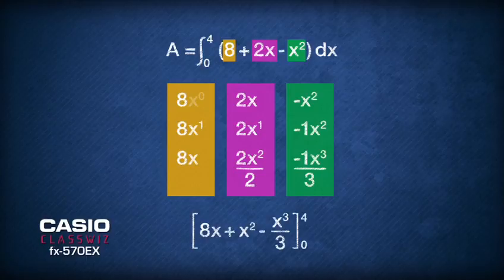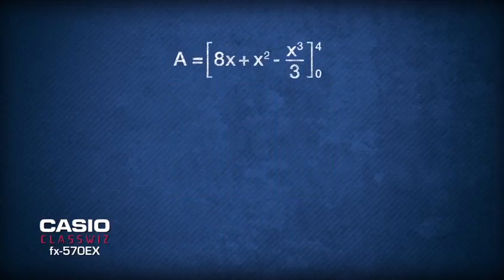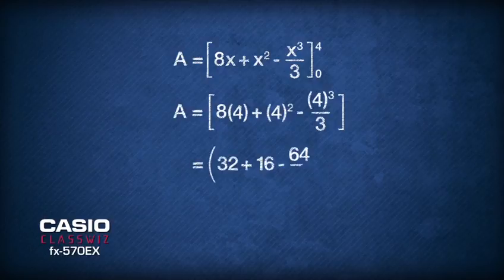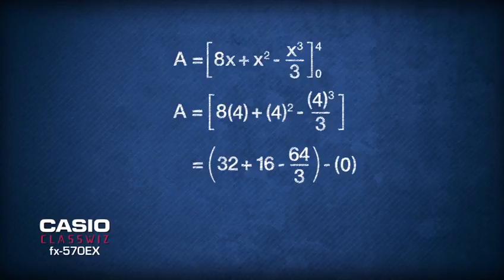You don't need to add an arbitrary constant of integration c, as this is a definite integration. What we need to do now is substitute the value of the upper limit, x equals 4, into the integrated function, and subtract the value generated by substituting the lower limit, x equals 0, into the integrated function. Simplifying the numbers gives the area as 26 and 2 over 3.